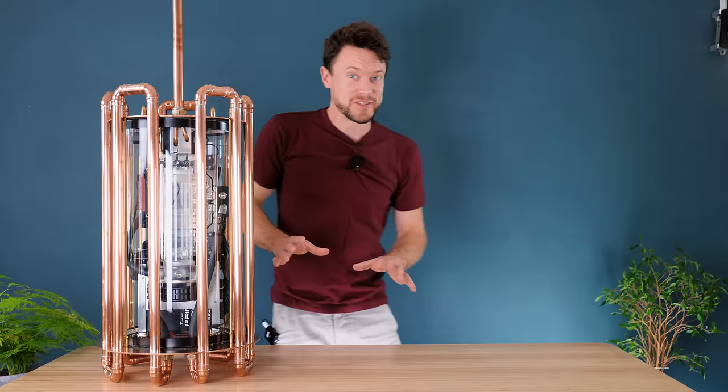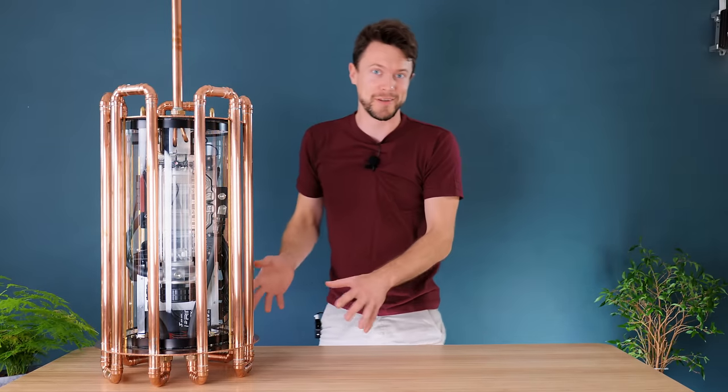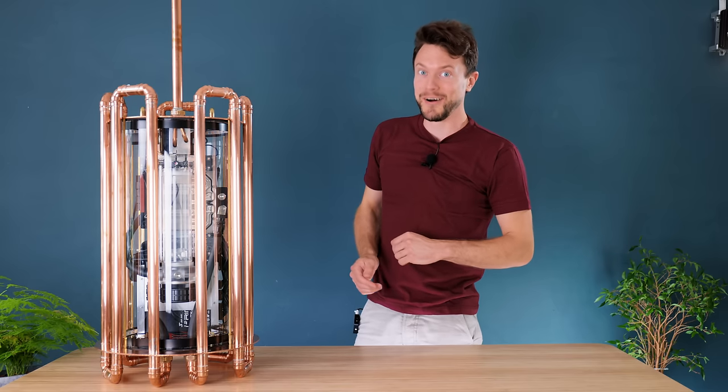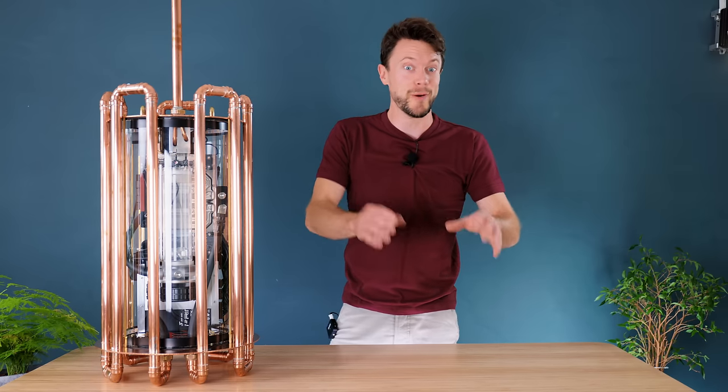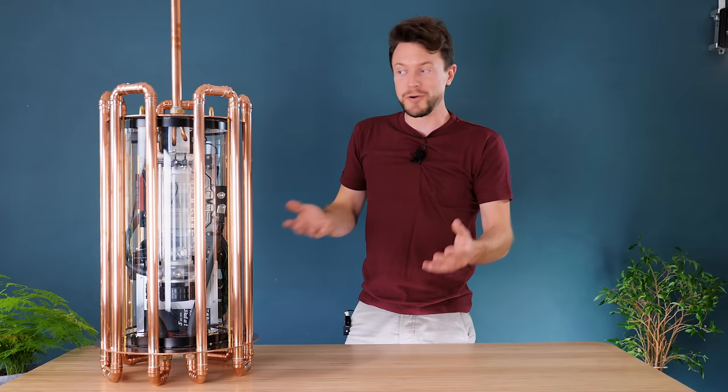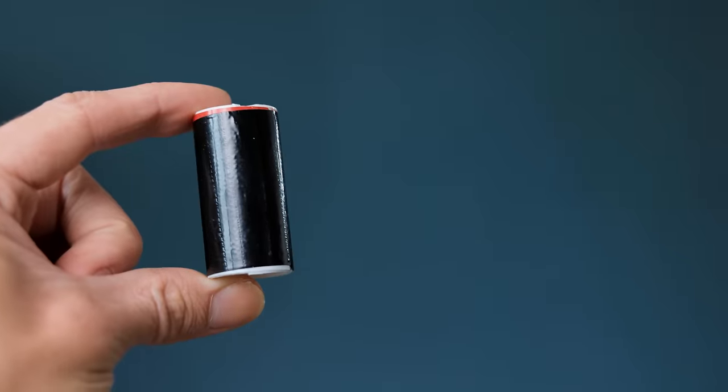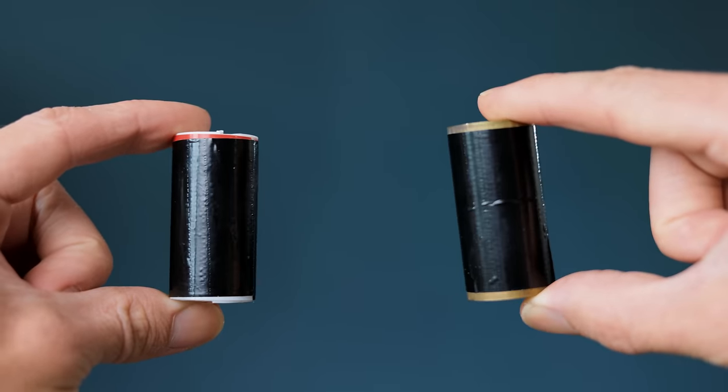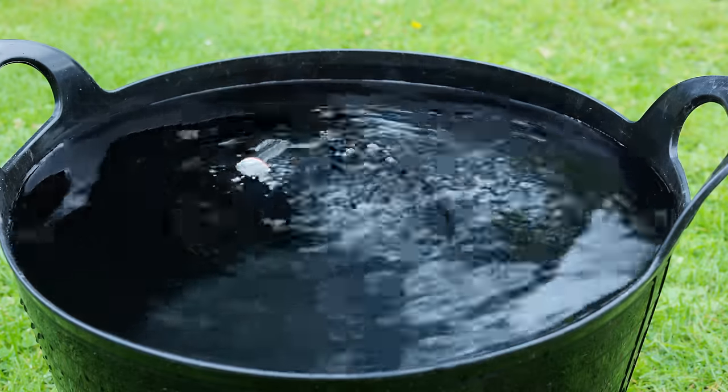Now, a primary consideration when you build anything that goes underwater is, of course, its buoyancy. I found out this the hard way when I built my DIY submarine project, as I made it far too buoyant and had to weigh it down a lot to get it to go underneath the surface. So, to avoid that same issue this time, let's calculate it. You see, an object's buoyancy is simply defined by whether its weight is lighter or heavier than the volume of water that it displaces.